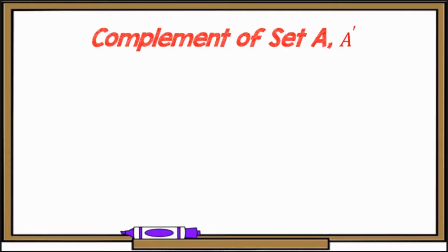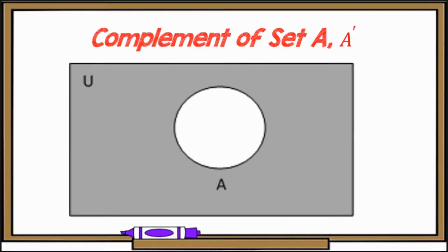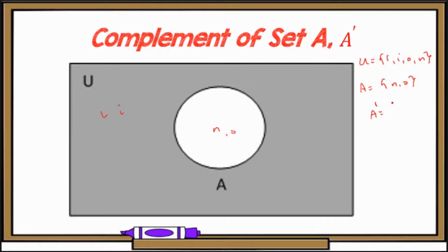Last, we have the complement of set A. For the complement, everything in the universal set that is not in set A is included. The universal set is the set containing the letters of the word lion: L, I, O, N. Set A contains N and O. N and O go inside circle A, while L and I are in the universal rectangle but outside set A. For the complement of set A, we have the letters L and I.